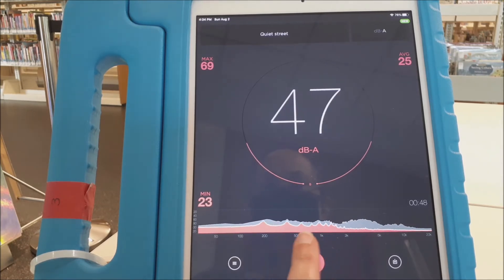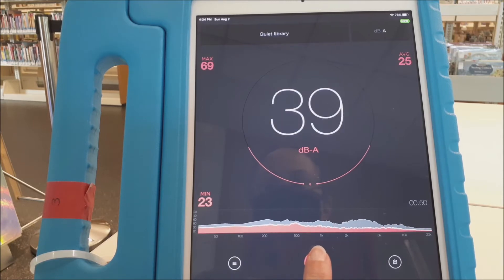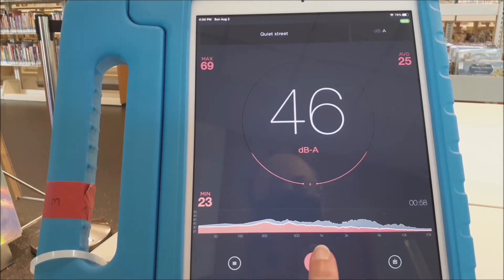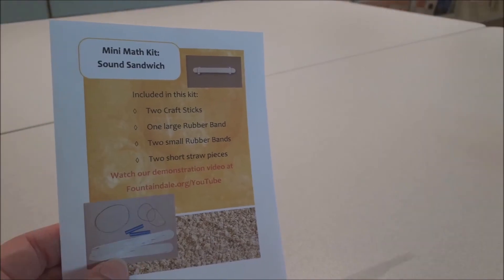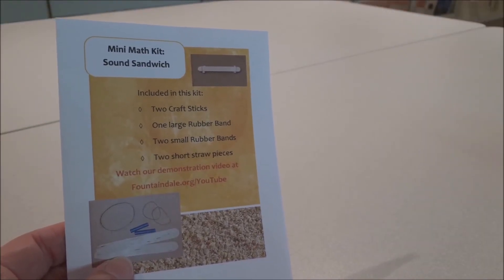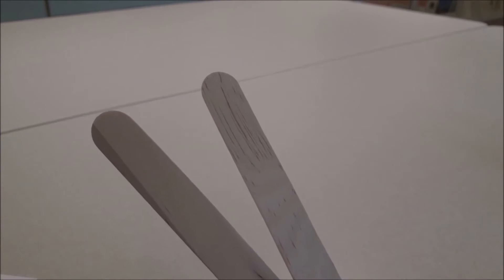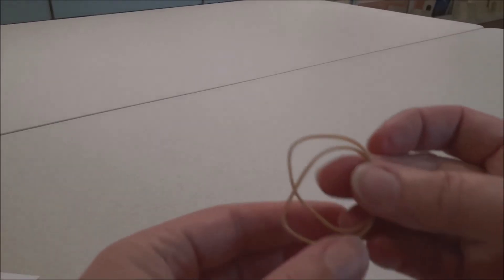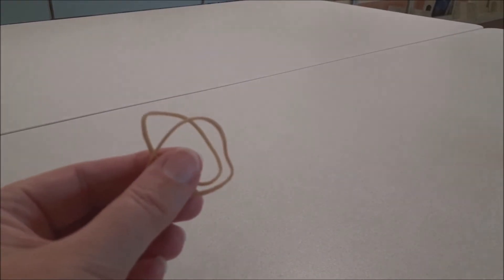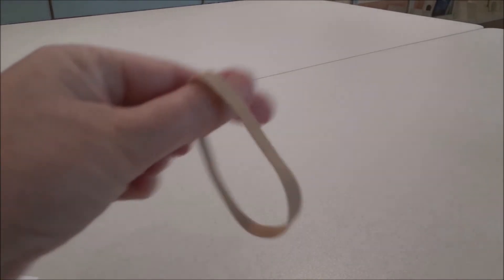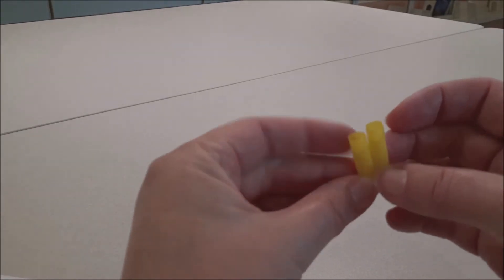Okay, so now we'll go on to our sound sandwich that we're going to be making today. And once the sound sandwich is made, we can check its decibel level also. Next, in the kit that you would have picked up at the Children's Services desk, it would have included the instructions, two craft sticks, some small rubber bands, one large rubber band, and two pieces of straw.